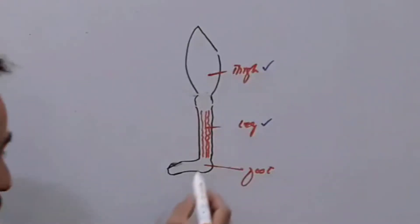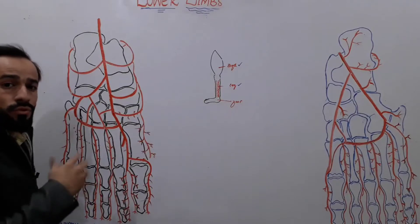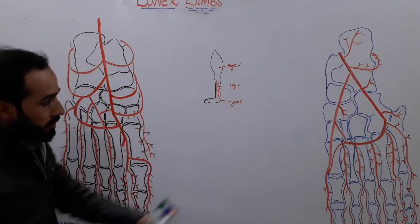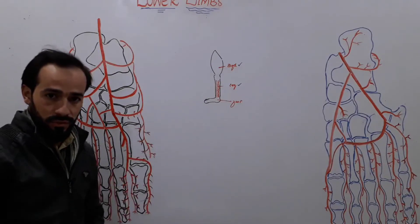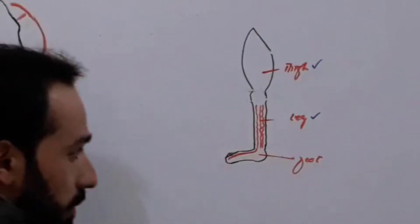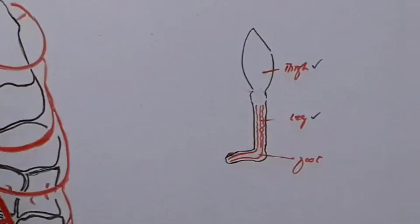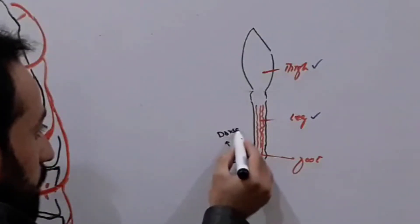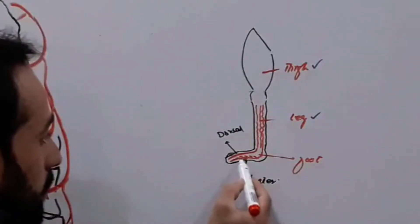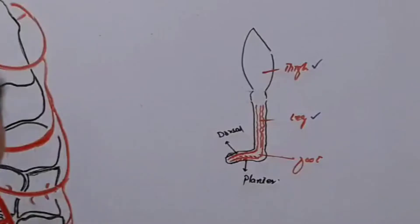In this lecture we are going to discuss the blood supply of the foot. I have drawn one foot with two surfaces — this is the right foot showing the dorsal surface, and that is the plantar surface of the foot. We will discuss the branches of arteries present in both the dorsal surface and the plantar surface of the foot.